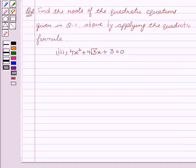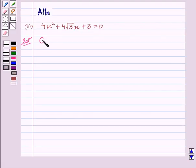Now let's start with the solution. Our given equation is 4x² + 4√3x + 3 = 0.